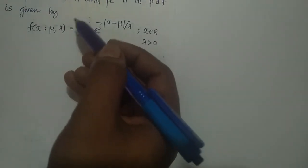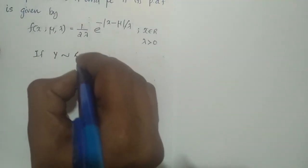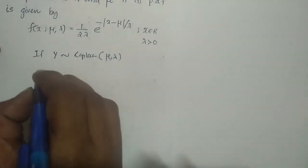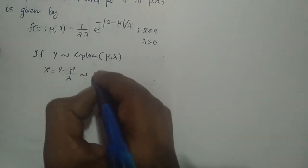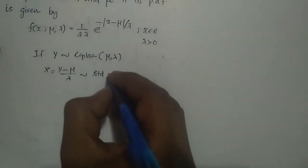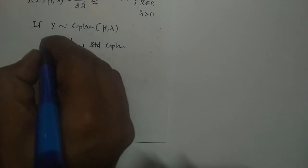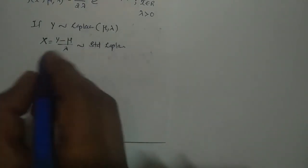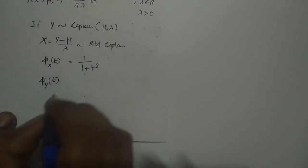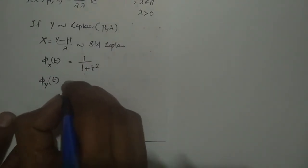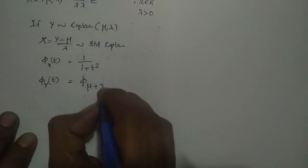Now we derive the characteristic function of the double exponential or two-parameter Laplace distribution. We use the result that if Y follows a double exponential distribution with parameters μ and λ, then X = (Y − μ)/λ follows a standard Laplace distribution. From this relation, we can write Y = μ + λX.